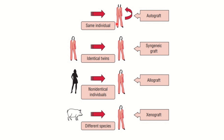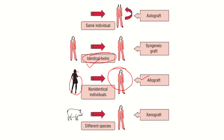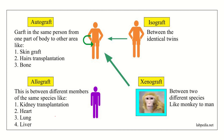Another picture shows the autograft — tissue taken from one part of the body and transplanted into another part. Syngenic or isograft applies to genetically identical or identical twins. When two people are different but the same species — both human but not genetically identical — it is called allograft. Tissue collected from a pig and transplanted into a human is called xenograft.